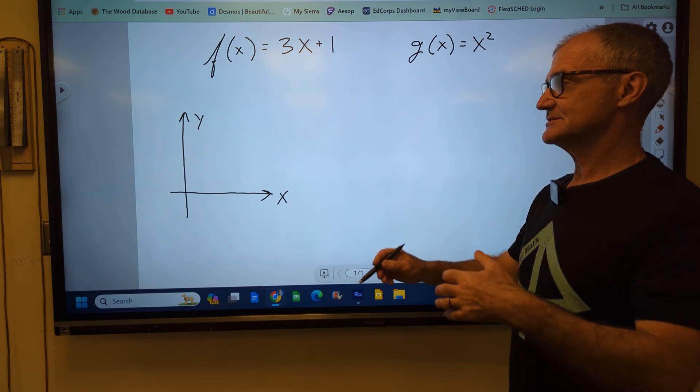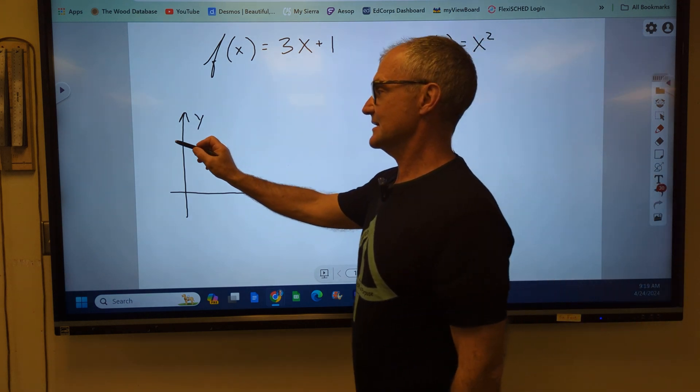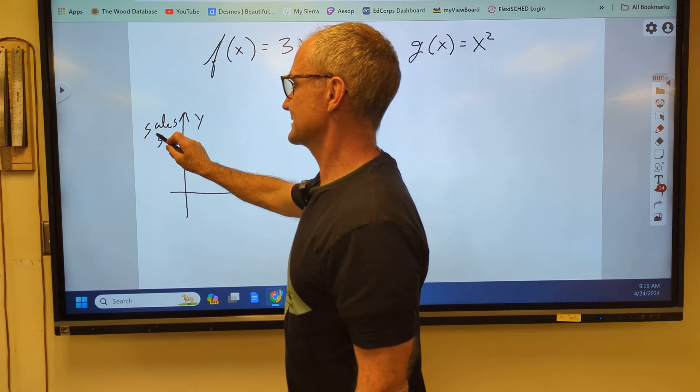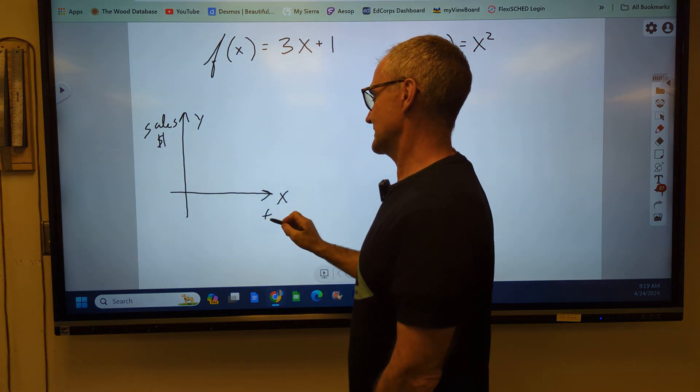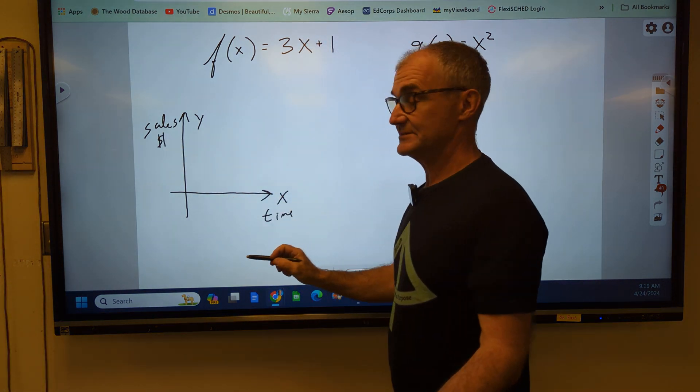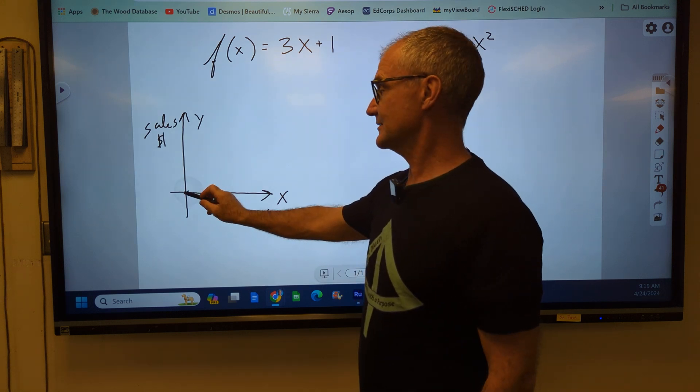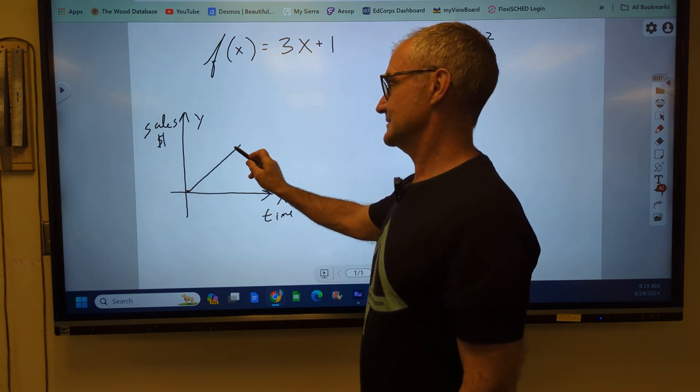If you want to do dollars as sales over time, sales, your units would be dollars, depends on time. And then hopefully if it's a good business, you start out with no sales at time zero, and it starts to increase at a linear path.